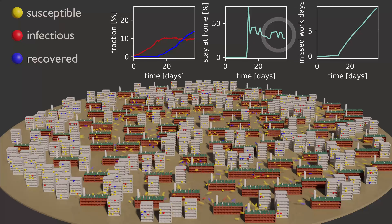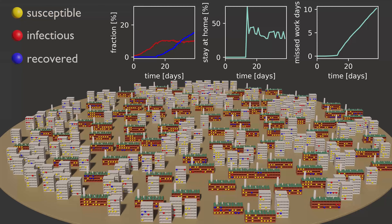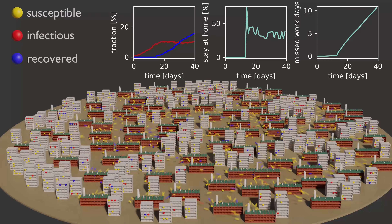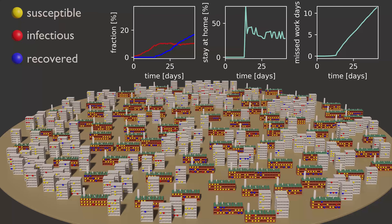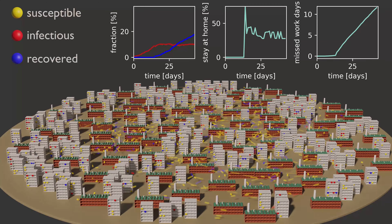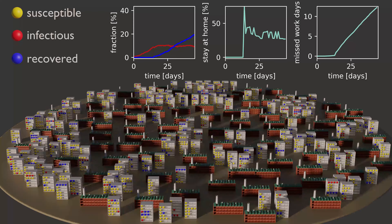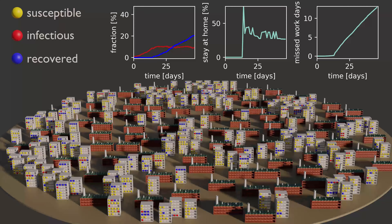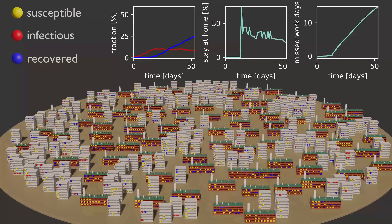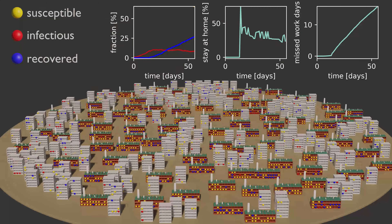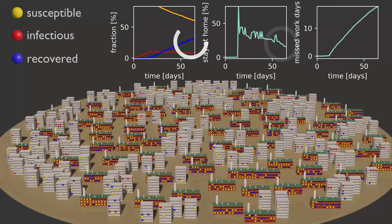So we continue to accumulate missed workdays as you can see in the graph on the right. More and more blue marbles are now appearing in the simulation — marbles which have recovered from the virus. This is good and bad news at the same time because it means more marbles had to go through the disease, but it also means more and more marbles are immune against the virus. On the long run, the fraction of marbles that need to stay at home is going down because more and more marbles are anyway immune.